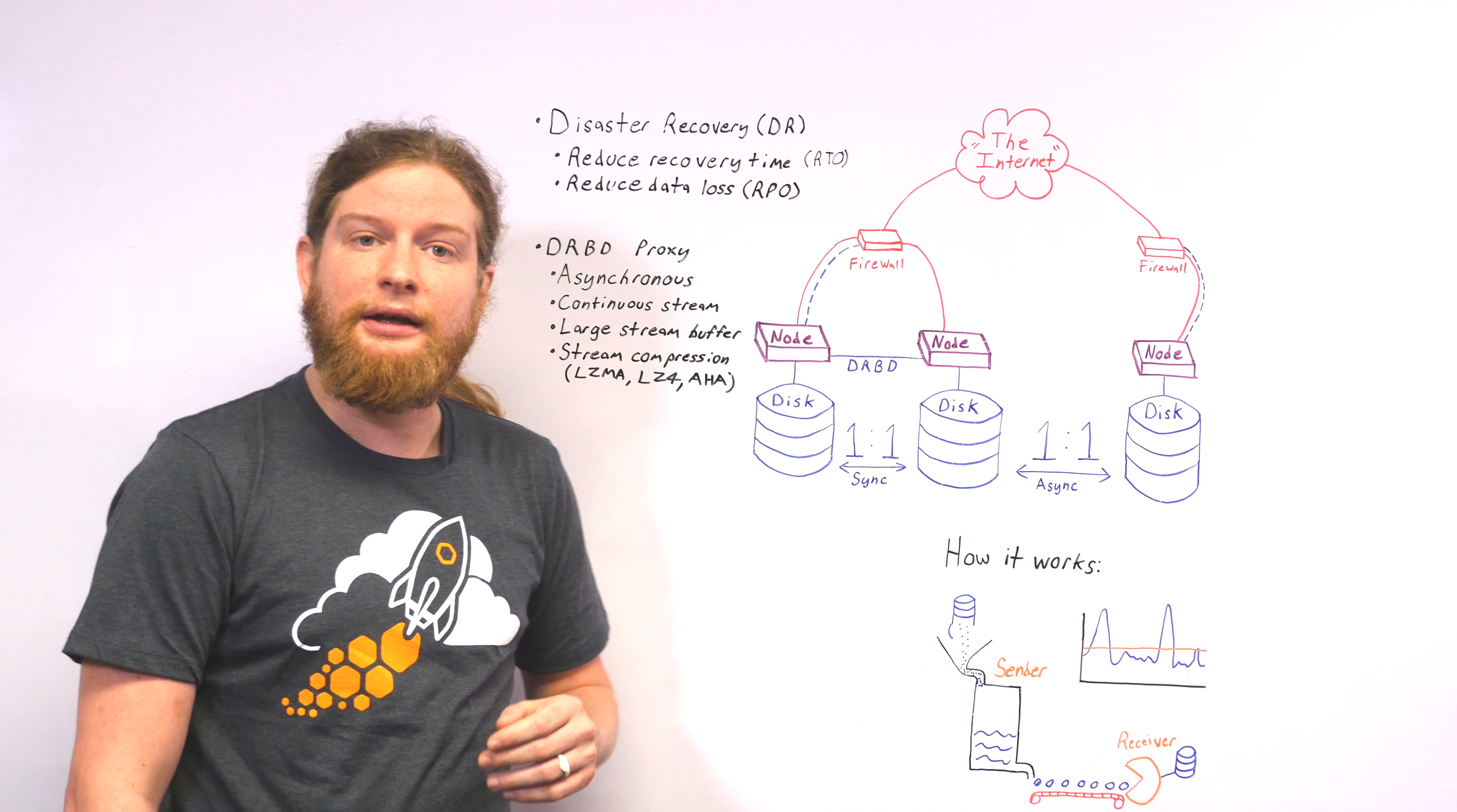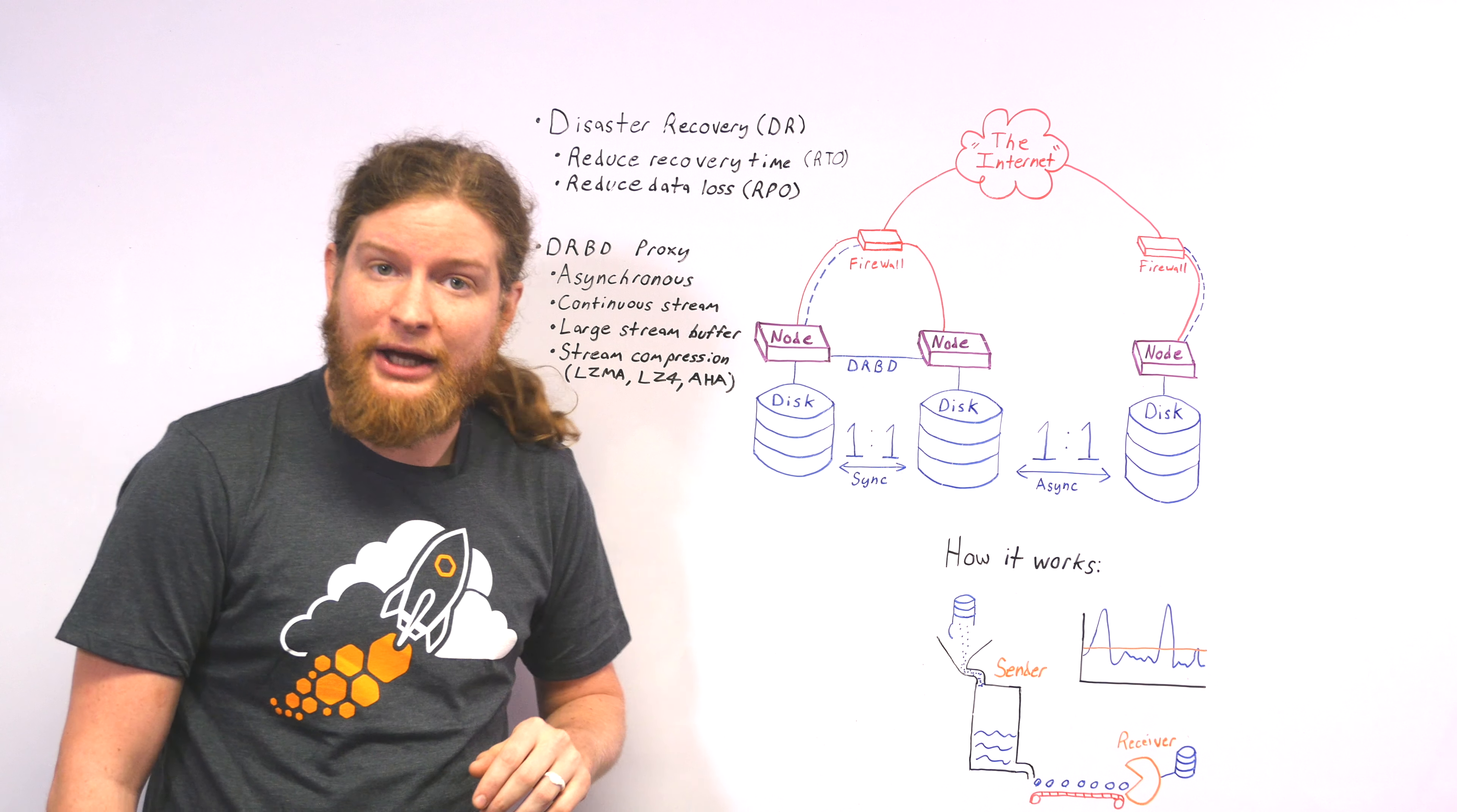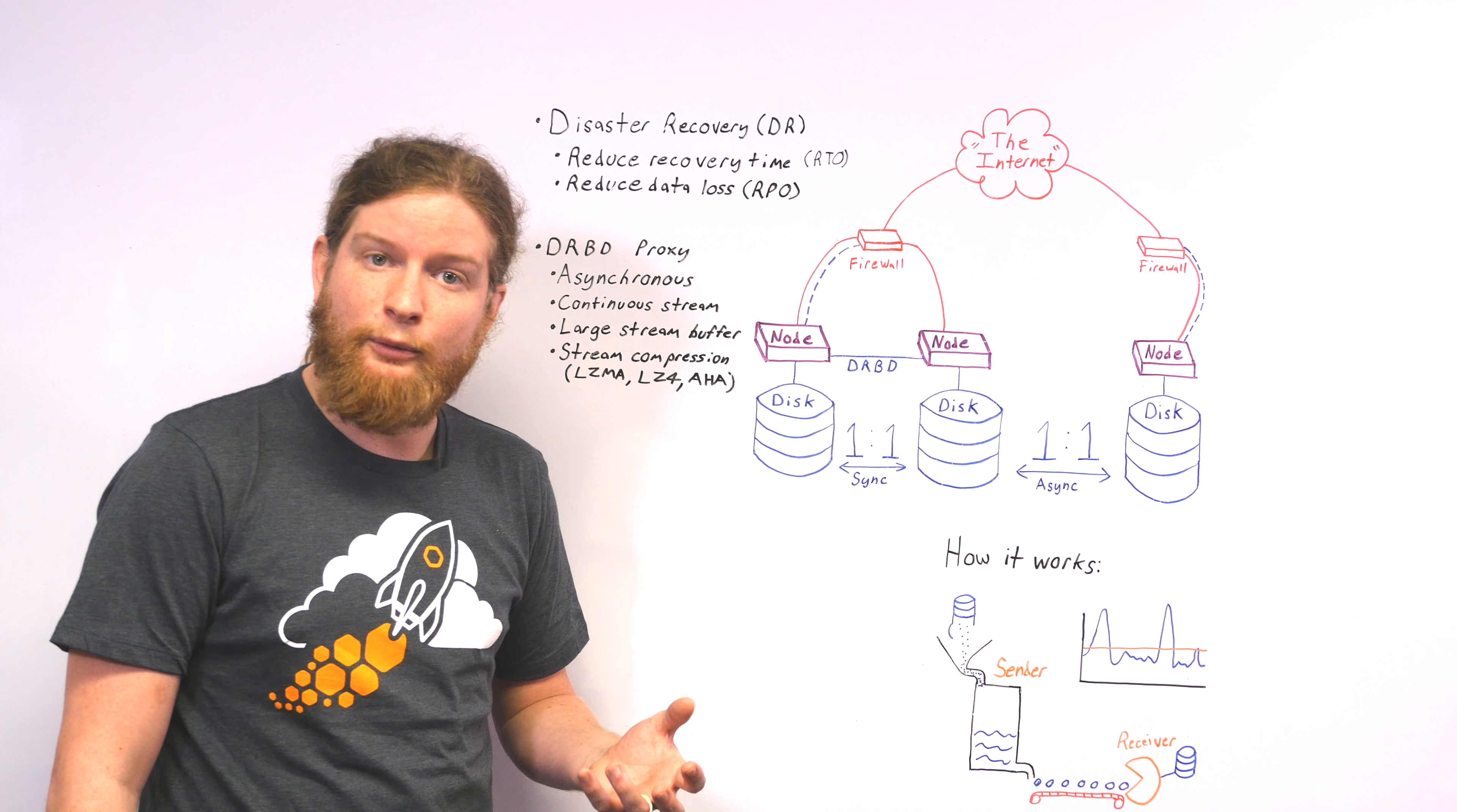DRBD proxy extends DRBD's ability to replicate asynchronously with a few extra features. The most important of those features, for DR purposes, is asynchronous replication. That is, rather than synchronous, which is to say we write a copy of data on one node, it is copied to another node, and then once the data is on both nodes, it's considered written. That's too tight for a WAN.